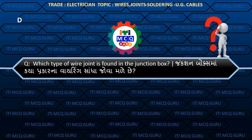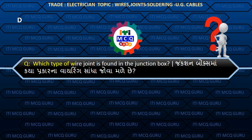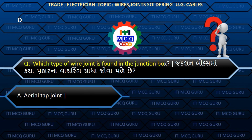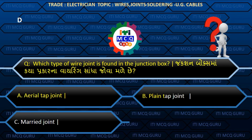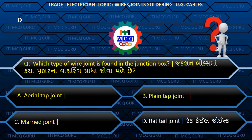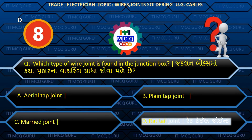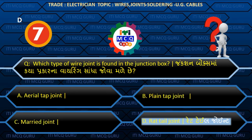Which type of wire joint is found in the junction box? (Junction box maa kaya prakar na wiring saandha jova madle chhe?) Answer D: Rat tail joint.